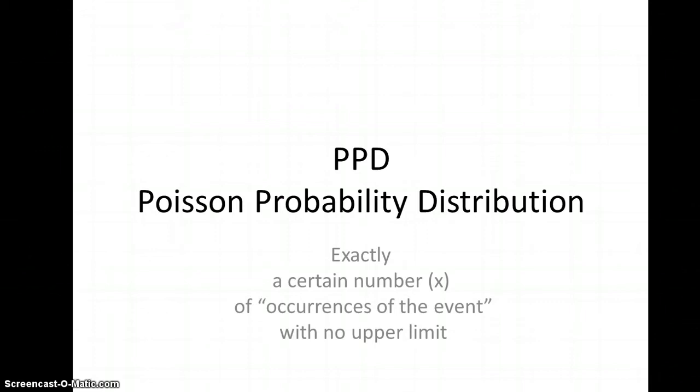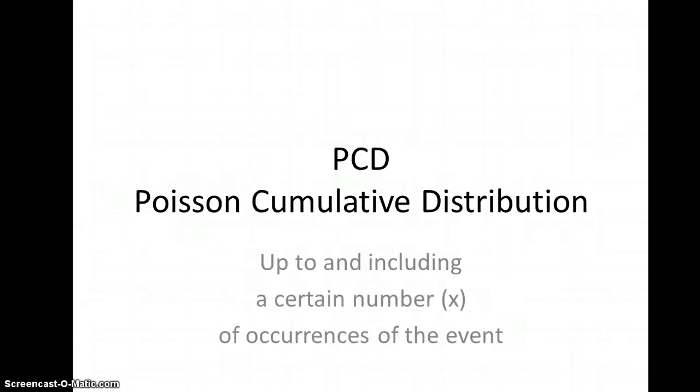Now it works the same way, but different if you like. So the PPD, we're looking for an exact number of occurrences of the event. And the PCD, we're up to and including the number of occurrences for the event.